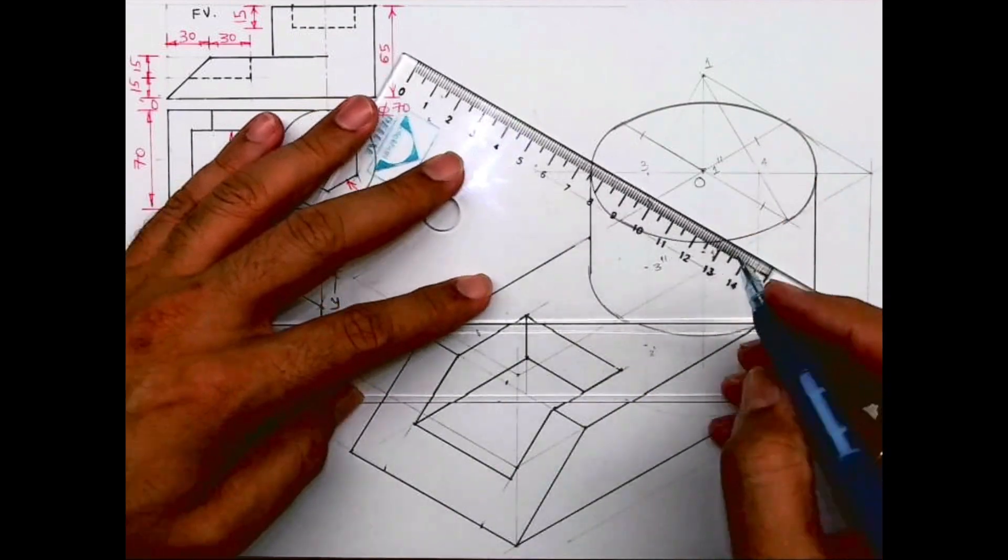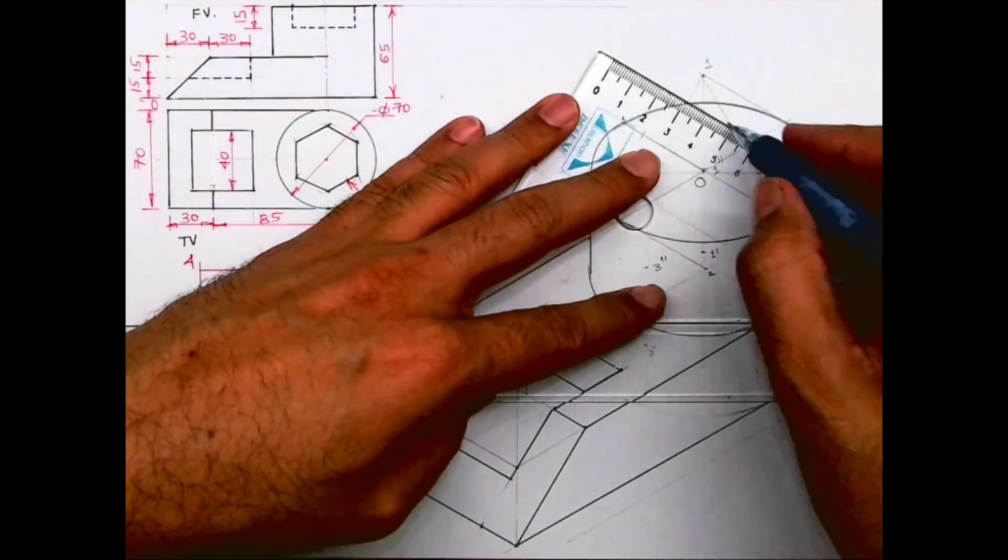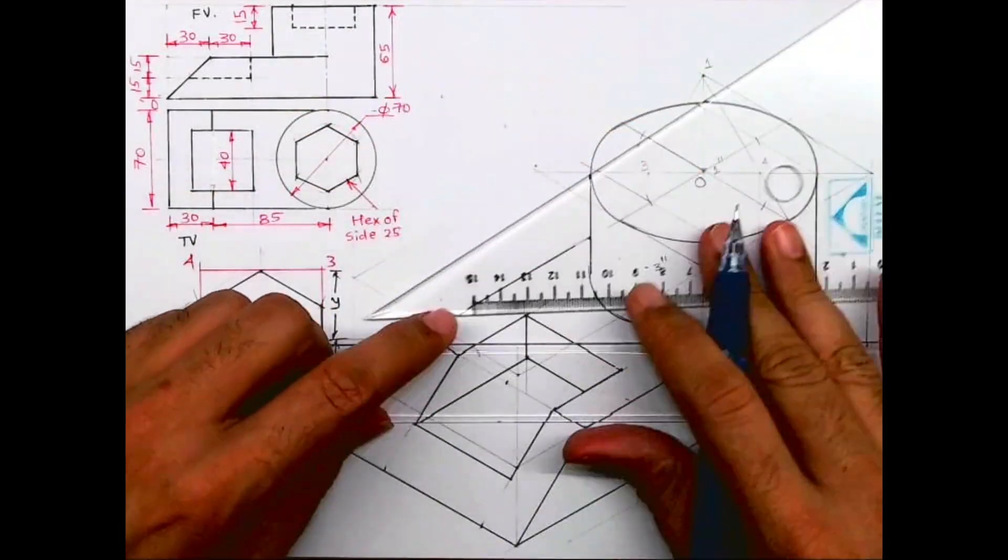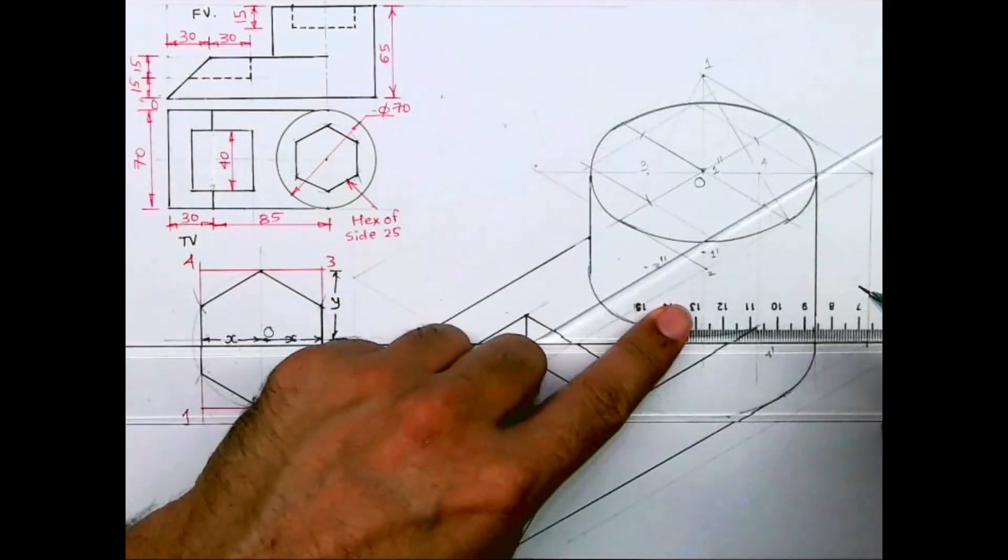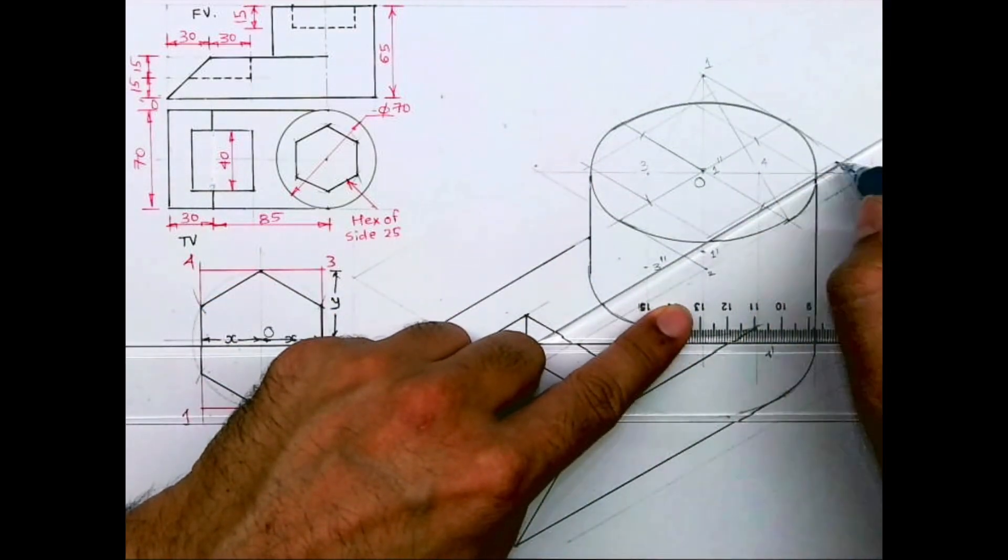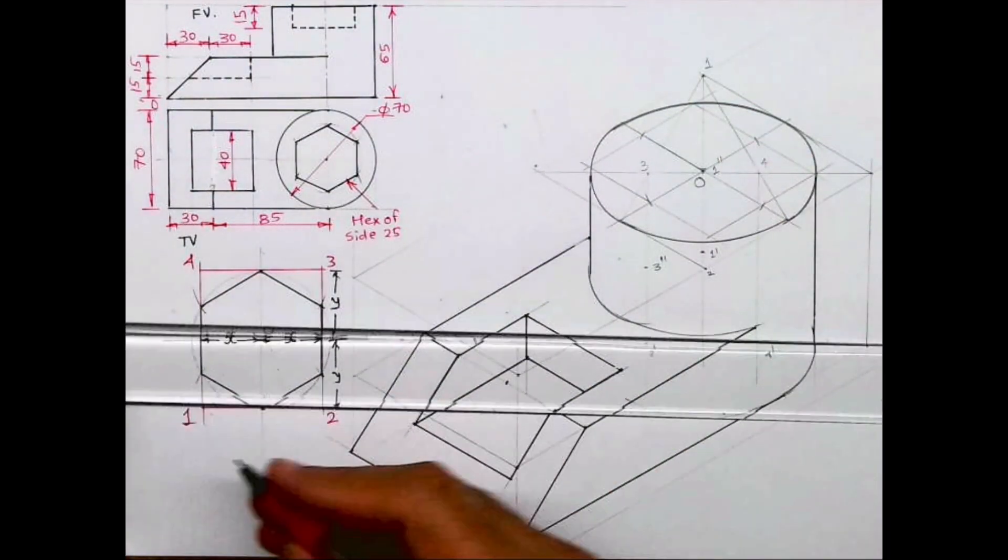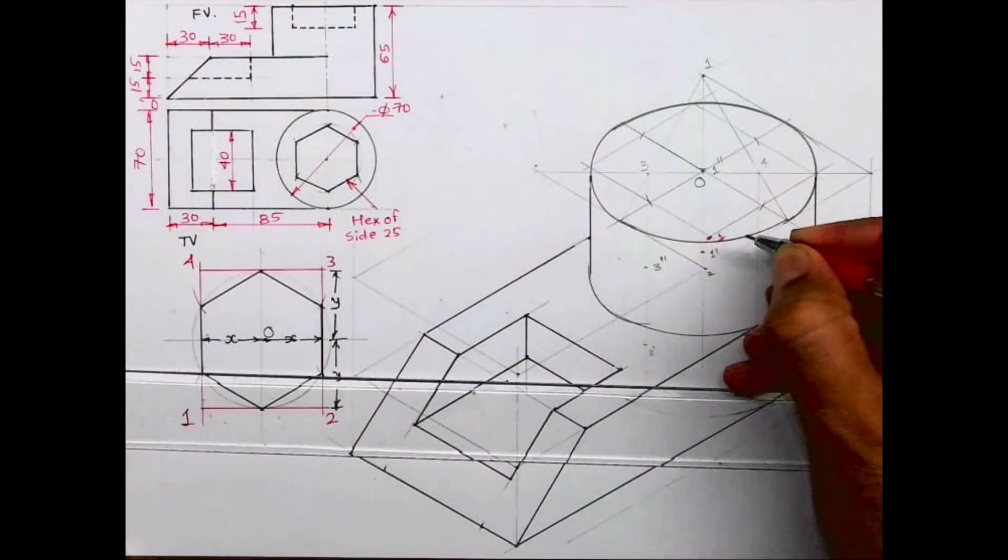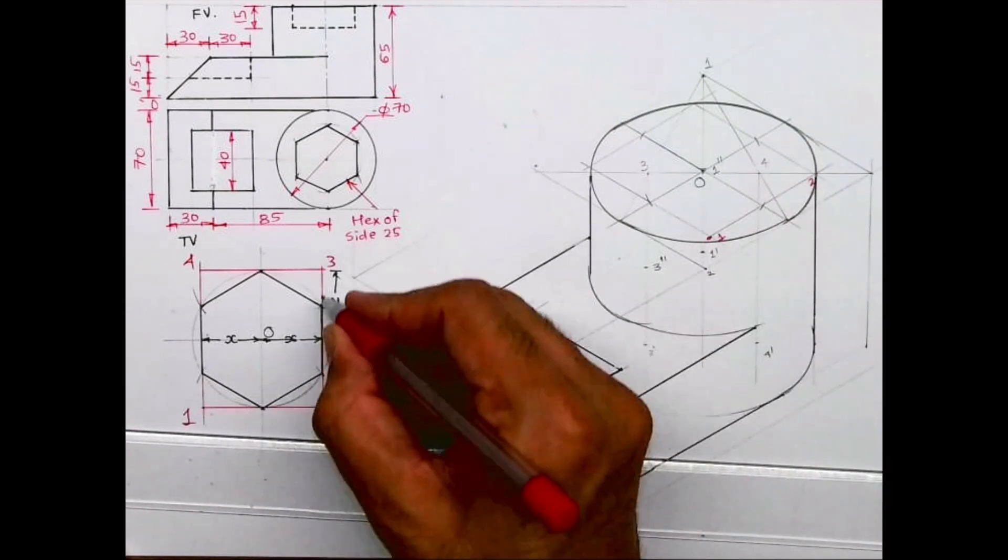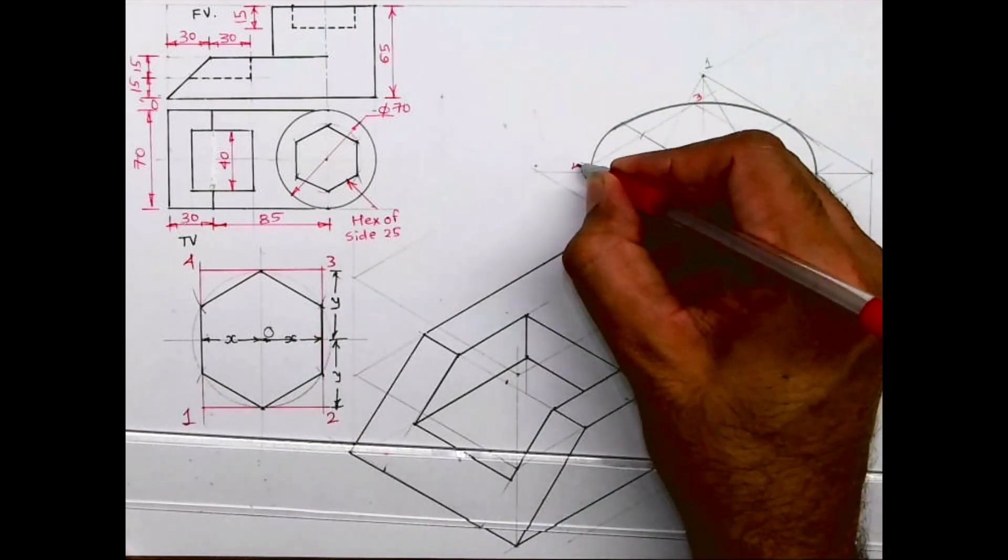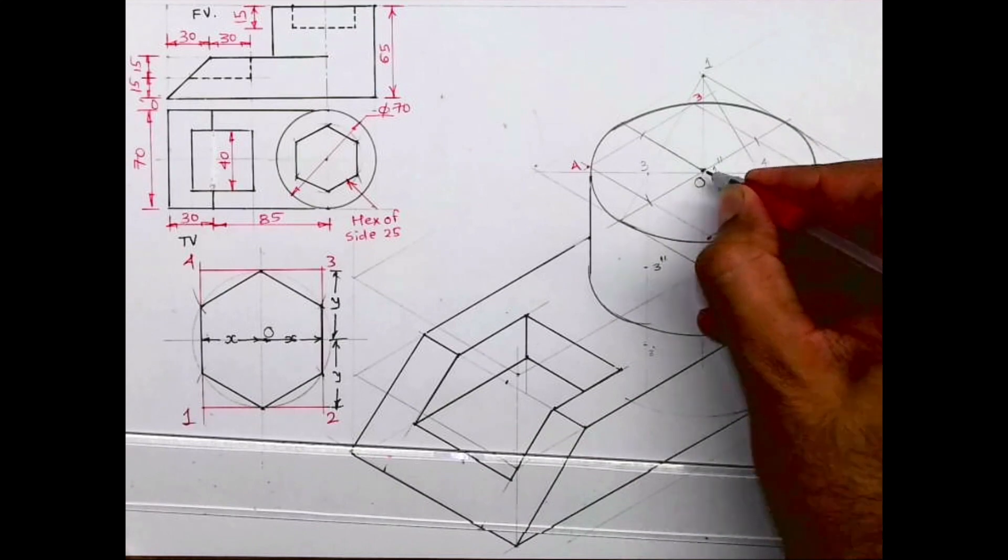Then from here you draw lines like this. So this is what you will get, rectangle. This is 1, 2, 3, 4, this is O.